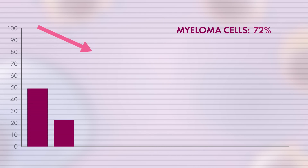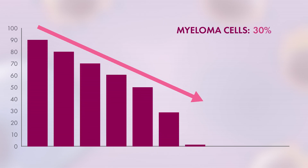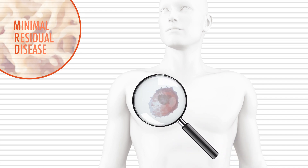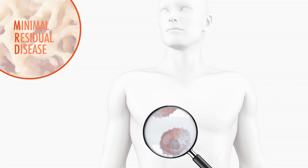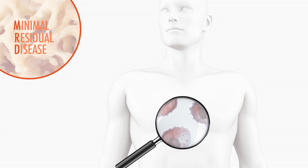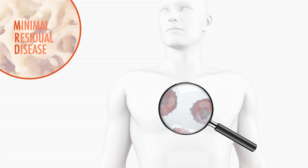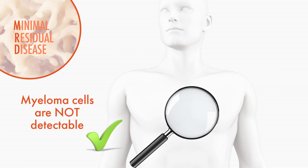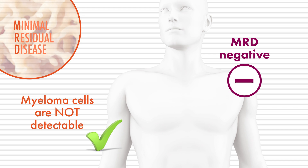Achieving a deep response is critical with high-risk myeloma, and doctors aim to achieve a complete response with minimal residual disease, or MRD, negativity. MRD refers to the small number of myeloma cells that often remain within the bone marrow after treatment, even when achieving a complete response. There are tests that can detect one myeloma cell in a million cells, and MRD negativity is achieved when no myeloma cells are detected in the bone marrow, even using these very sensitive tests. Patients who achieve a complete response with MRD negativity generally have an improved prognosis, even with high-risk disease.